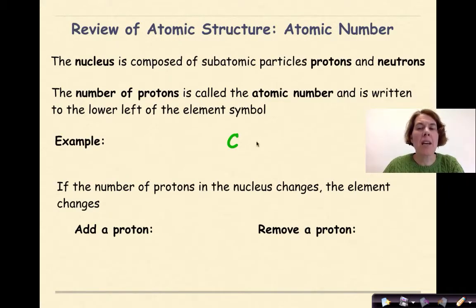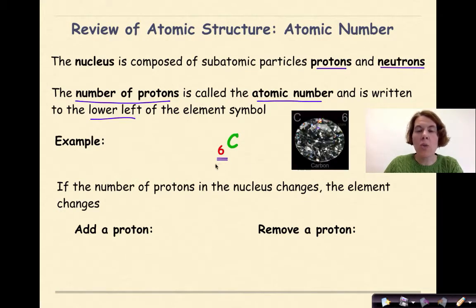Let's start out by talking about atomic number. The nucleus is composed of subatomic particles, protons and neutrons. The number of protons is called the atomic number and is written to the lower left of the element symbol. So here I have the symbol for carbon. The atomic number typically will be located in the lower left-hand corner. And a little visual of carbon as a diamond right here, one allotrope of carbon.